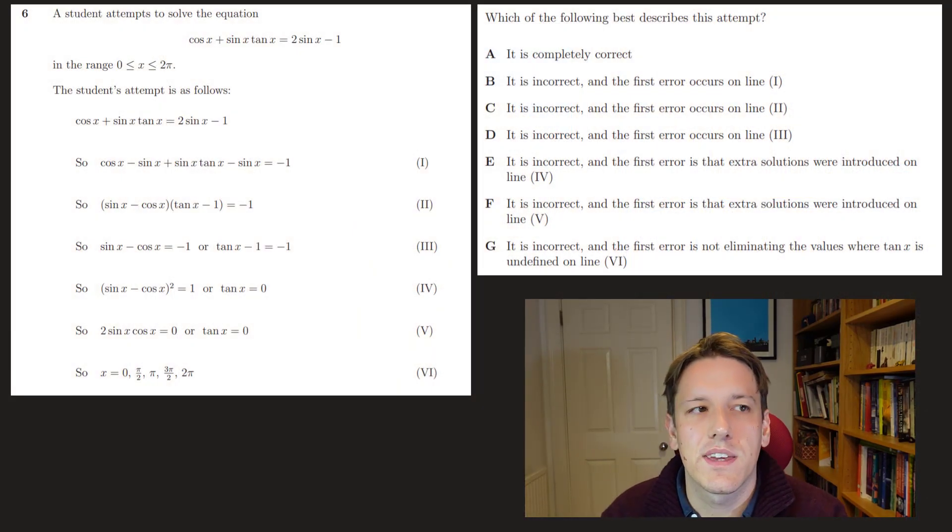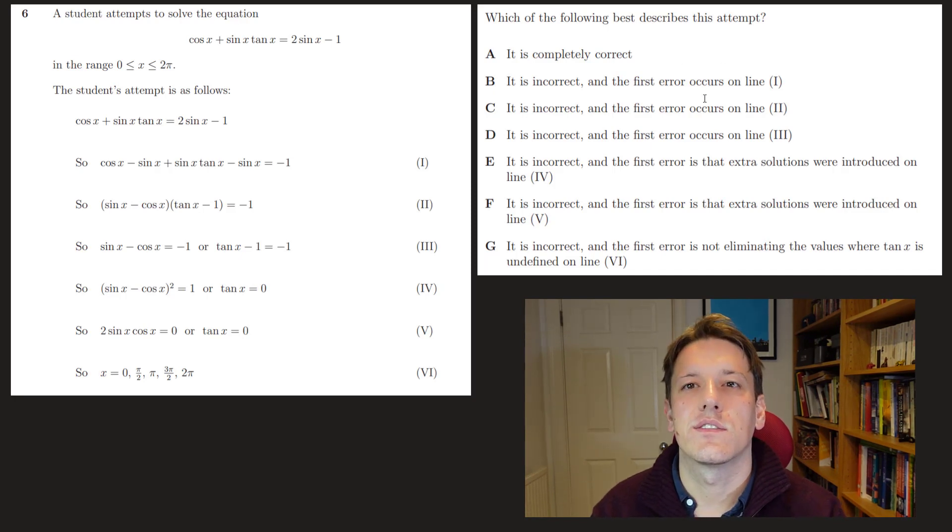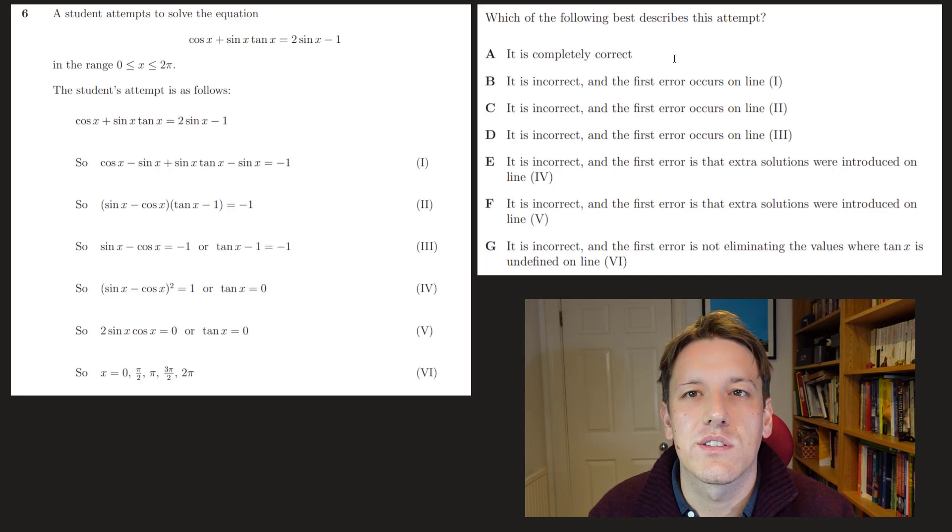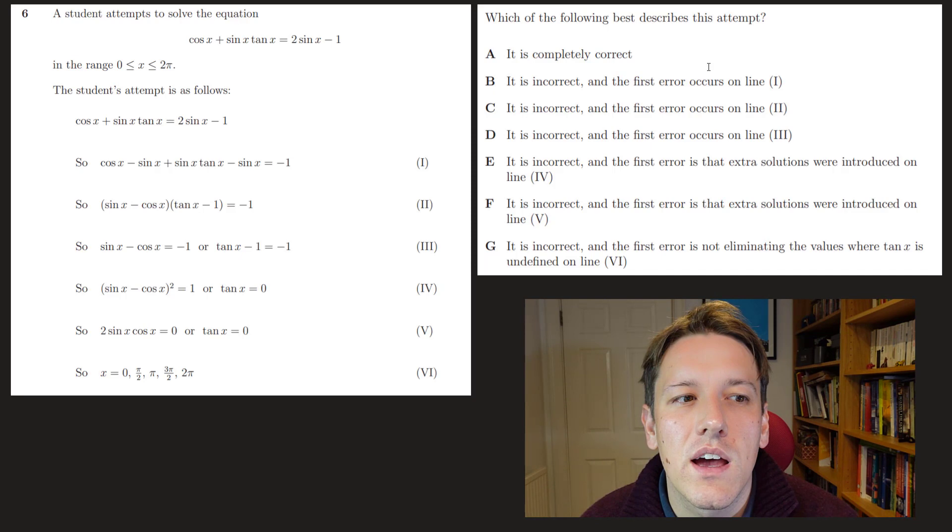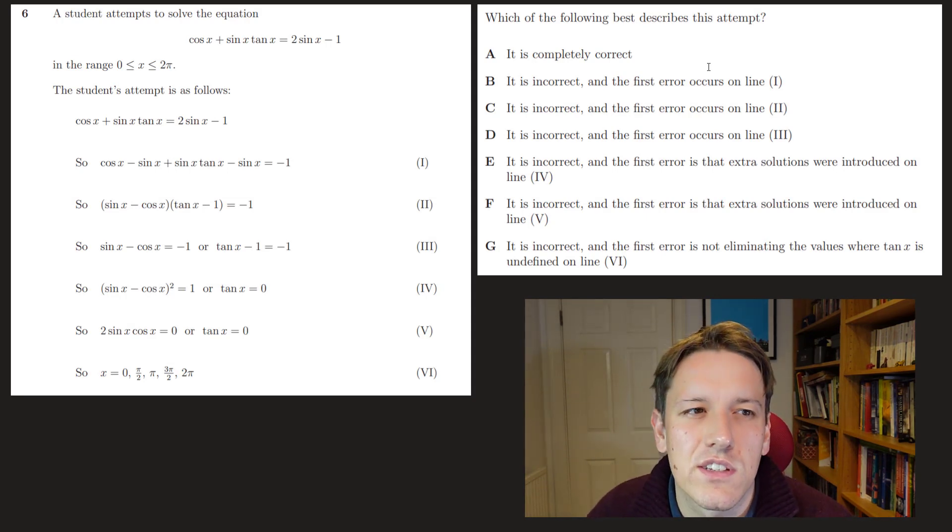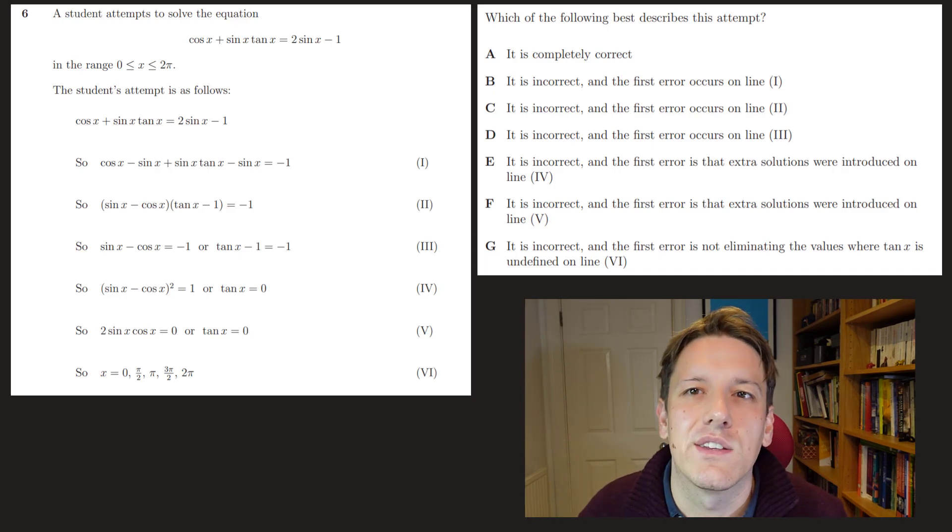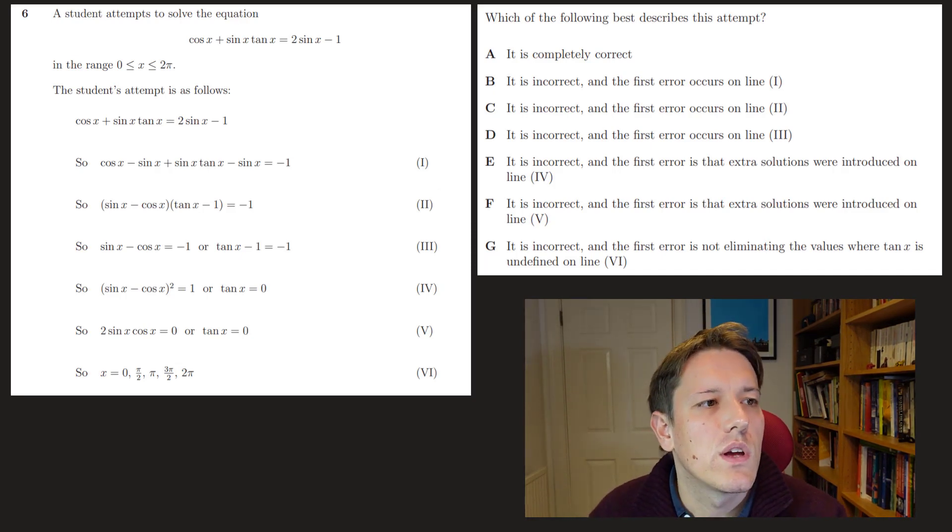So in question 6, we've got some marking to do. We've got a student's attempt to solving this equation here. If we just glance down the answers quickly, what we're asked to do is to either say that the student's answer is correct, or to identify when the first error comes in. That can either be because there's an error in line 1, 2, or 3, or because they've introduced extra solutions in 4 and 5, or because they haven't eliminated values in stage 6. But to me, it makes sense just to start at the beginning of this question and work our way through.